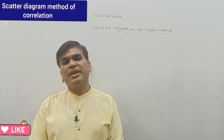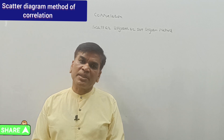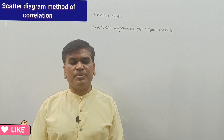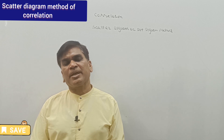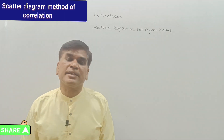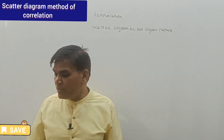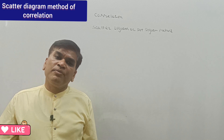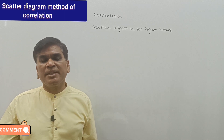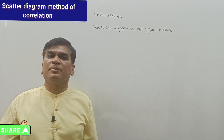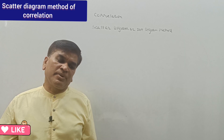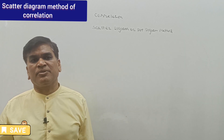In today's video, we will discuss one method that is not so important, just to have knowledge that this method also exists to calculate correlation. It is called the dot diagram method or scatter diagram method. With the help of this method, we can know the correlation by plotting dots on a graph of a series and seeing how much correlation is there.